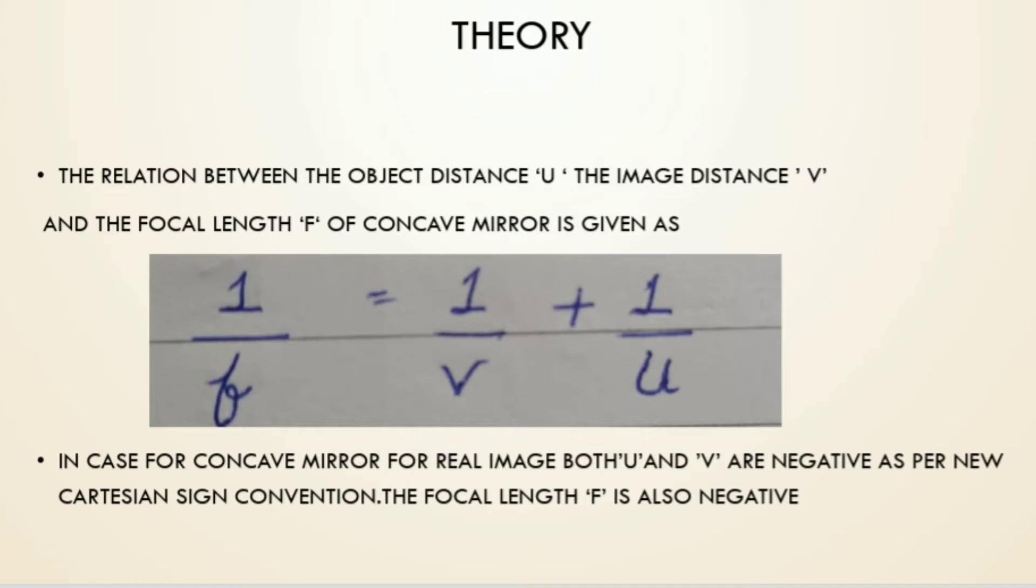In case of concave mirror for real image, both u and v are negative as per new Cartesian sign convention. The focal length f is also negative.